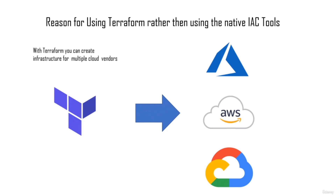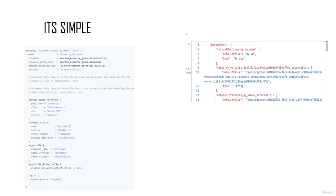If you are a DevOps engineer, it's imperative that you learn a tool like Terraform, which will give you a more holistic view on how to create infrastructure compared to native tools. Another important factor is simplicity. Terraform is specifically built for creating infrastructure, whereas tools like CloudFormation or Deployment Manager are very complex. If you look to the left there is code to create a virtual machine in Azure using Terraform, and to the right is a snippet from an ARM template — it takes much longer with ARM.